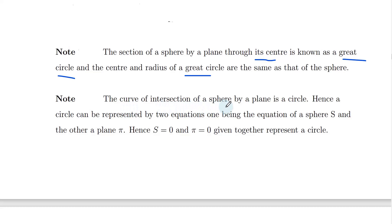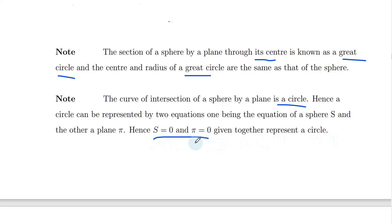The curve of intersection of a sphere by a plane is a circle. When we cut the sphere by a plane, the result is a circle, and the circle can be represented by two equations. Hence, S equal to zero and π equal to zero given together represent a circle — this means the equation of a circle.